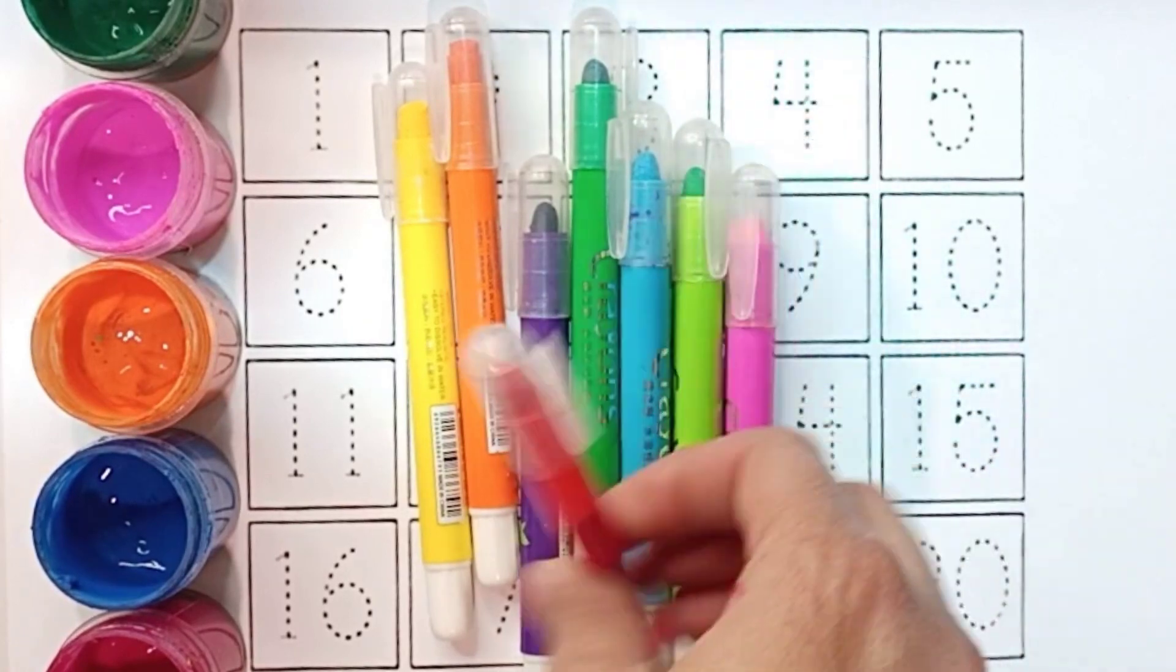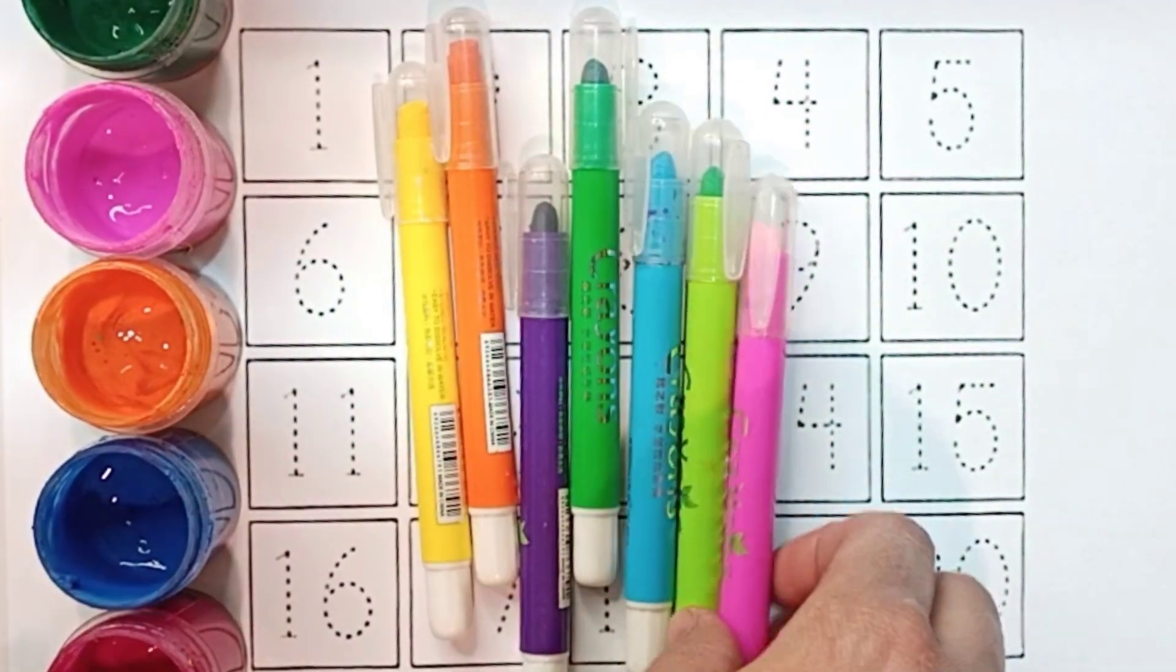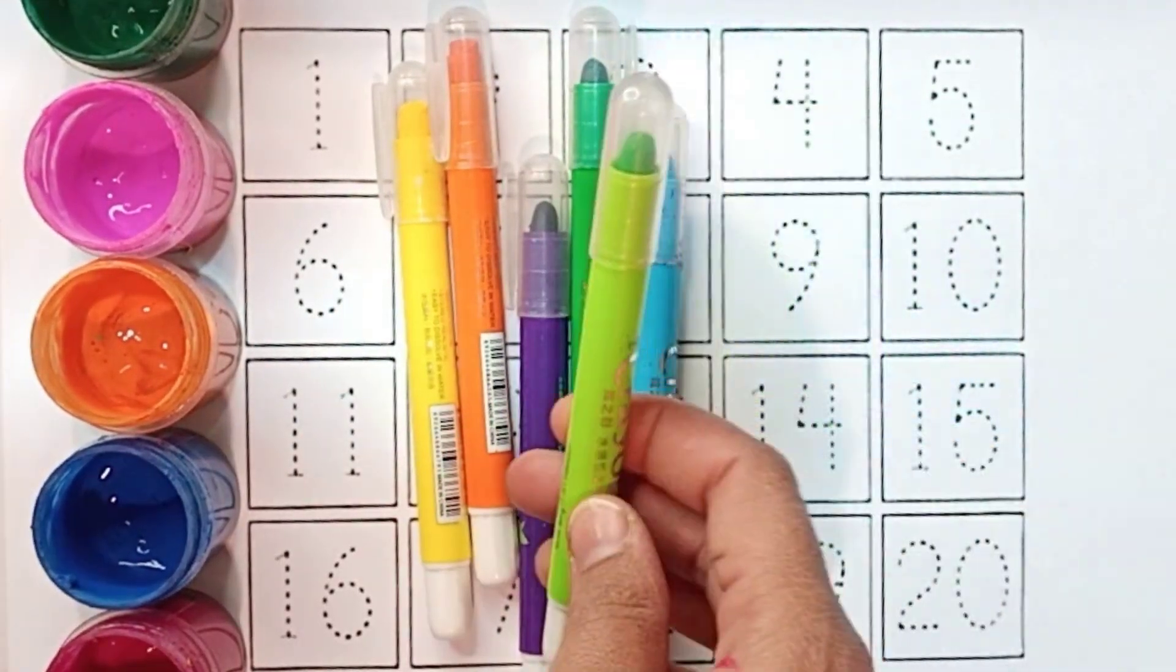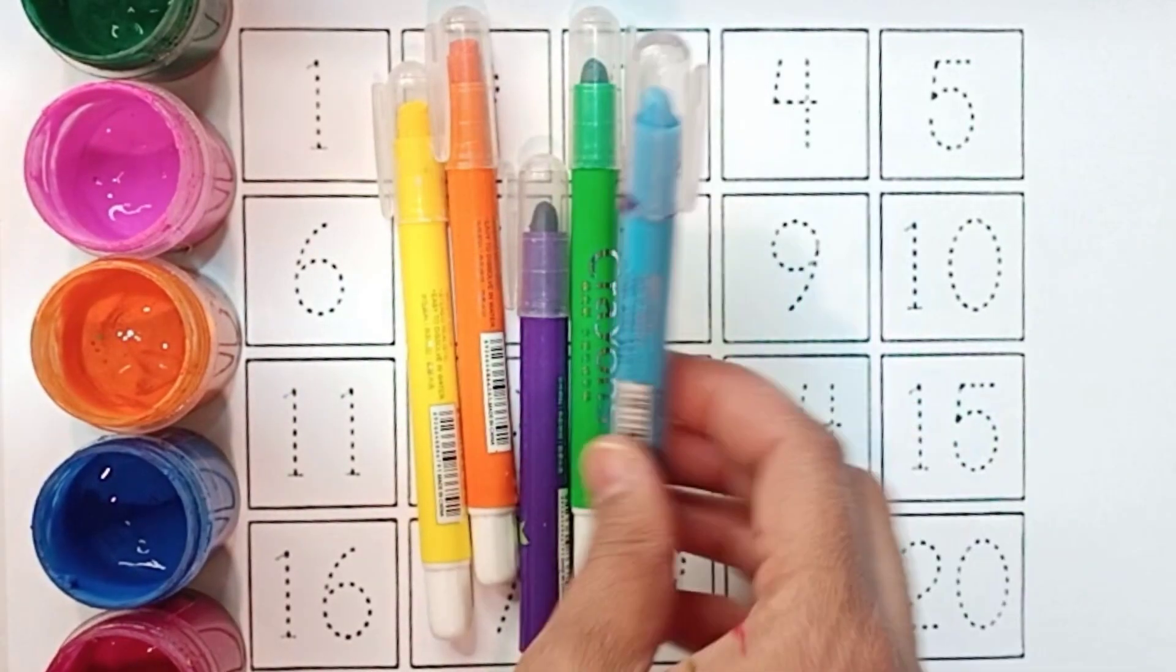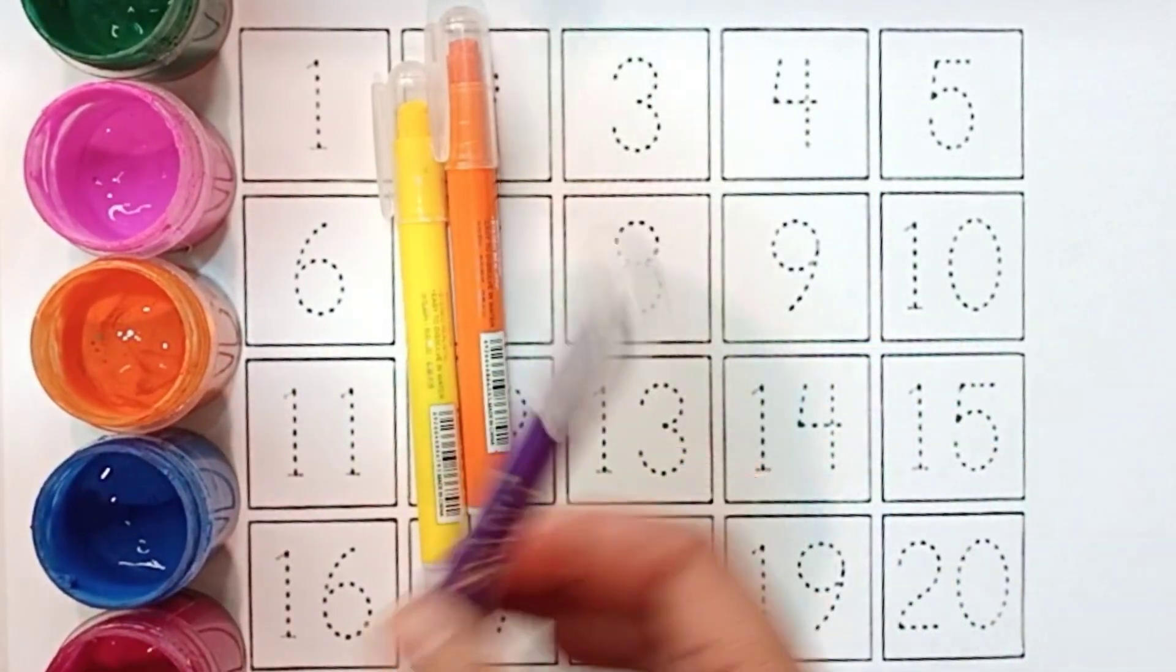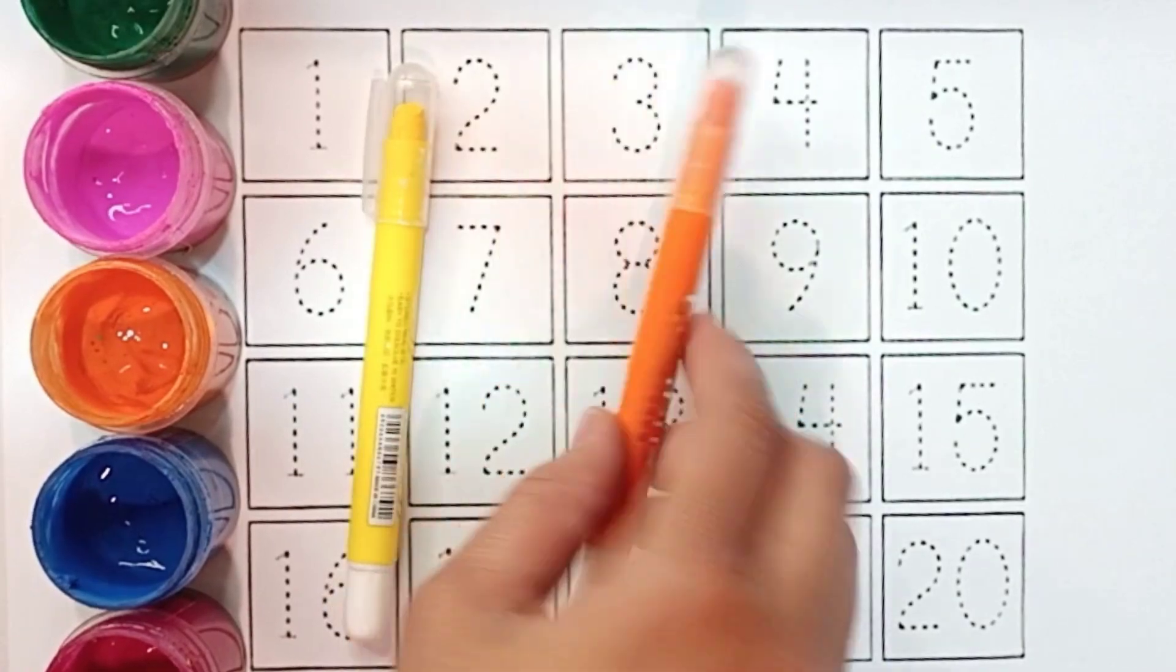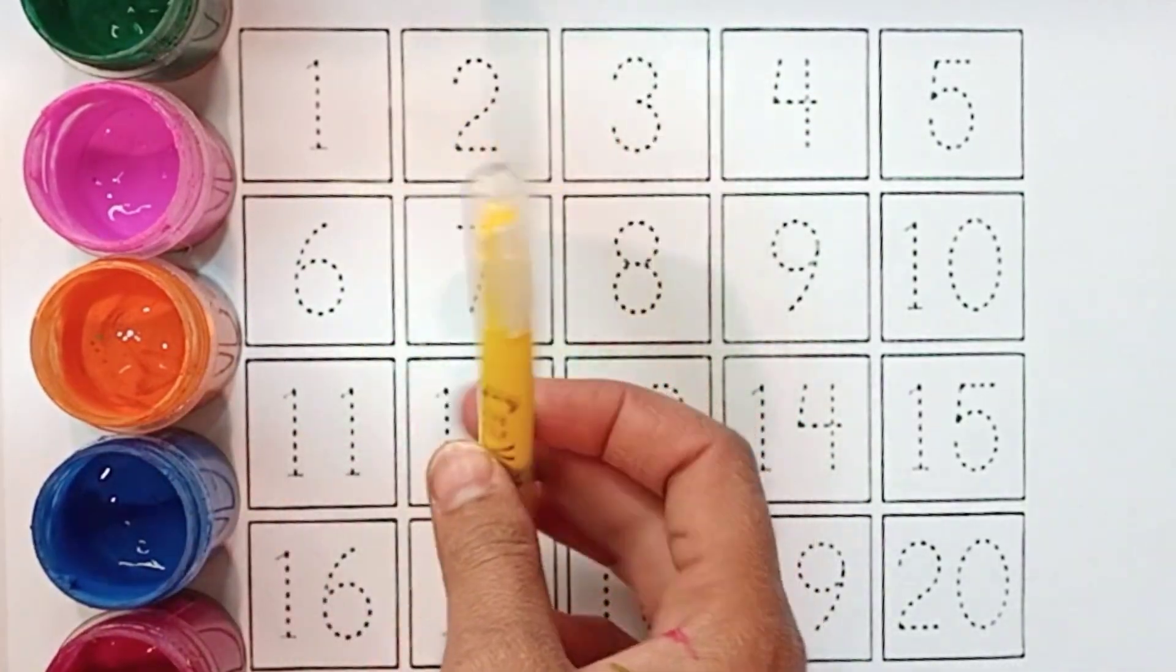Ye hai humare colors. Ye hai red color, baby pink color, light green color, sky blue color, dark green color, violet color, orange color, and yellow color.